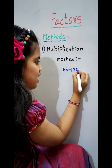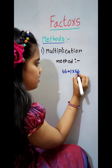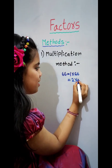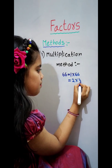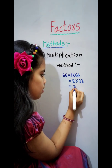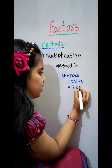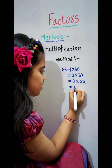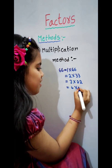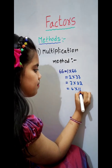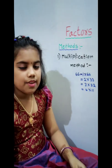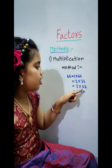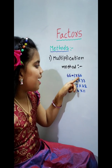One times 66 equals 66. Two times 33 equals 66. Three times 22 equals 66. Six times 11 equals 66. The factors of 66 are 1, 2, 3, 6, 11, 22, 33 and 66.